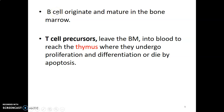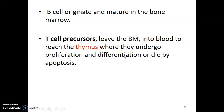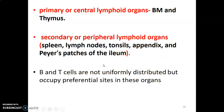Both B and T cells originate in the bone marrow, but B cells also mature in the bone marrow. T cells originate in the bone marrow but leave to go to the thymus for further maturation and proliferation. They can also die within the thymus by the process of apoptosis — programmed cell death.